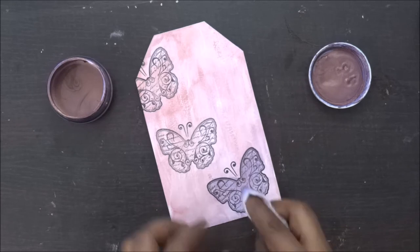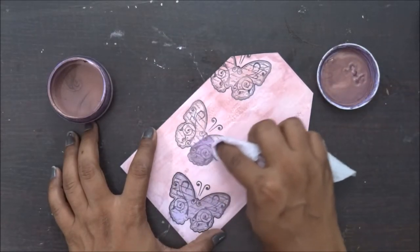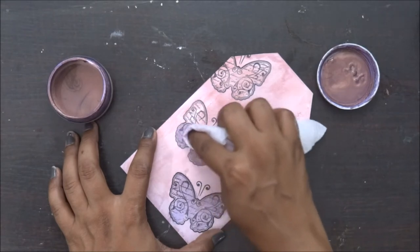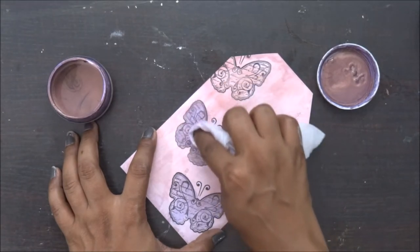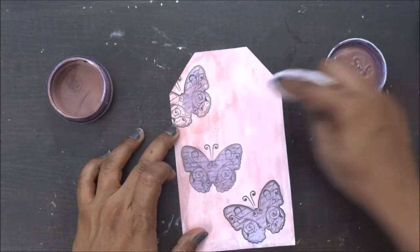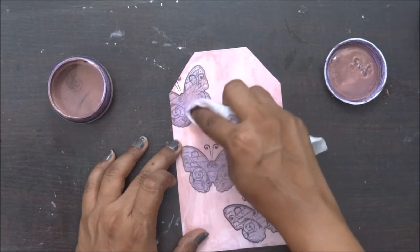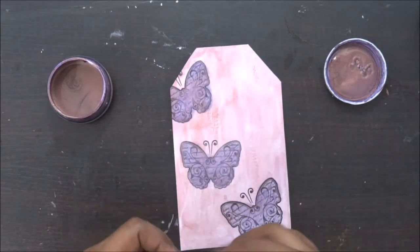you realize that maybe some color has come out from your motif, it's very easy to just wipe it out with your wet wipe. This is a super easy technique.